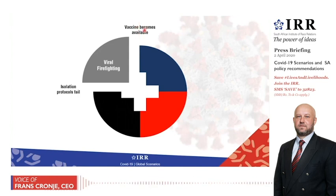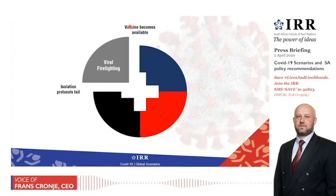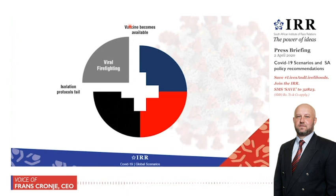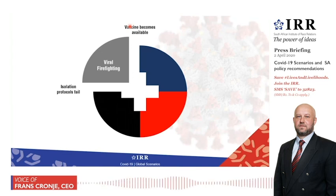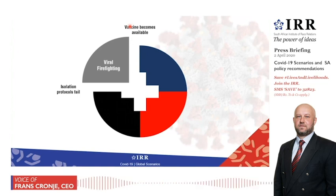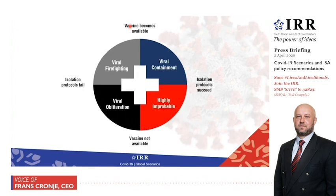In this scenario, you can substitute vaccine for mutation or a seasonal effect. South Africa will be moving back into its spring and summer in about six months' time. So you can put a time on Viral Firefighting of as short as about six months, when the seasonal effect will be back in our favour and may be useful in helping us emerge from the scenario.